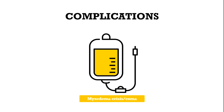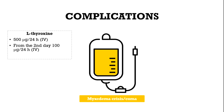Therapy of myxedema crisis or coma comprises a high dosage of L-thyroxine with 500 micrograms per 24 hours, and from the second day 100 micrograms per 24 hours, both administered intravenously. On top, liothyronine, synthetic T3, can be given.